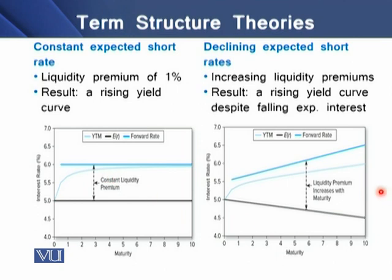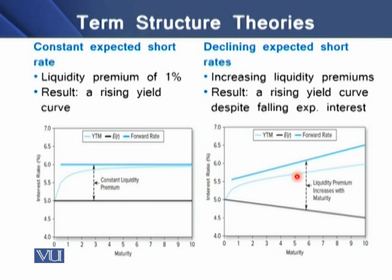In the second case, we have declining expected short rates shown by the thick black line. We see an increasing trend in the liquidity premium. The result is a rising yield curve, which shows that even with falling expected interest rates, the yield curve can still be upward sloping.